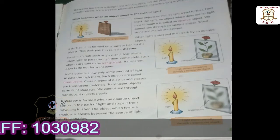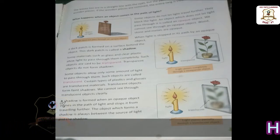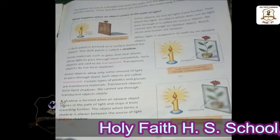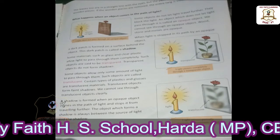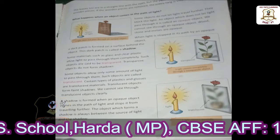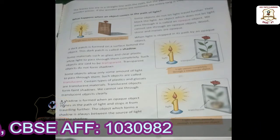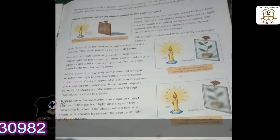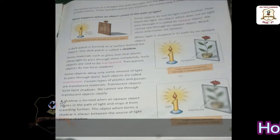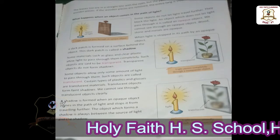In the previous class we learned the basics of light. First point: light is a form of energy. Second point: light can travel from one place to another. The Sun is the main example — it is a natural source of light.